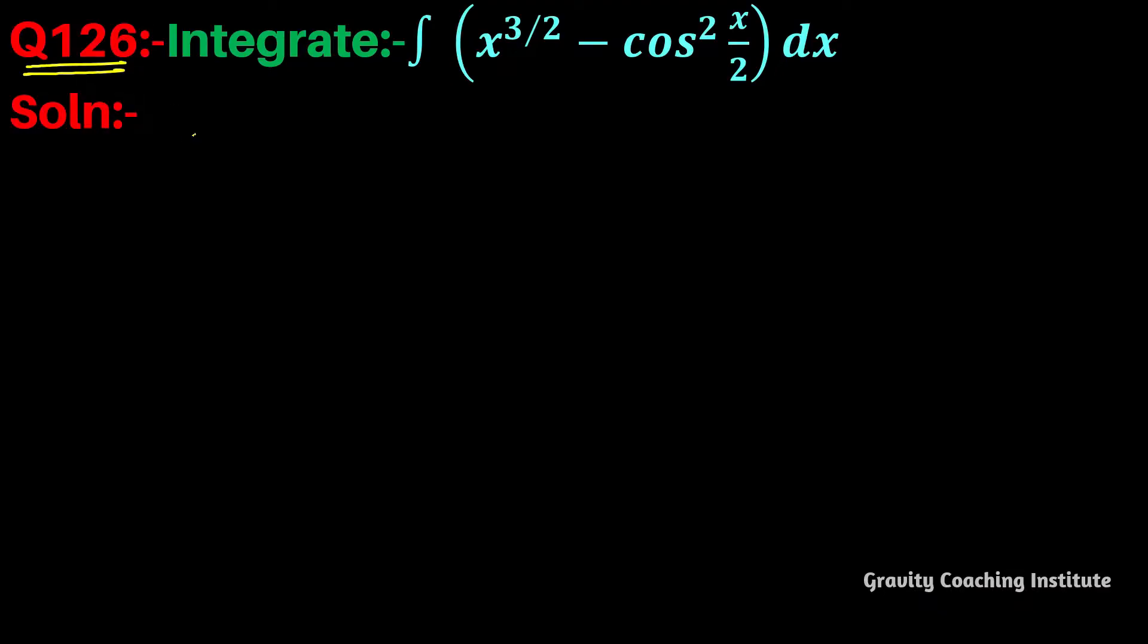Question number 126: Integrate x to the power 3 upon 2 minus cos square x upon 2 dx. So first of all, let I equal to integration x to the power 3 upon 2 minus cos square x upon 2 dx.